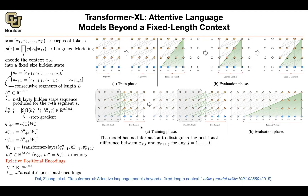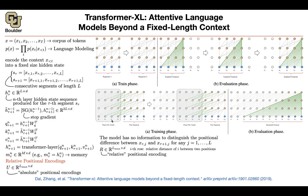So what is the fix? You cannot store the absolute position for all of your corpus because it would explode — the corpus size is huge. The idea is perhaps all you need is the difference between the indices. So maybe the relative position — while X7 is paying attention to X3, just the difference between the indices — is your positional encoding. So the relative distance between the two positions is going to be your positional encoding, and now you can have an Lmax without explosion.